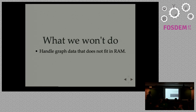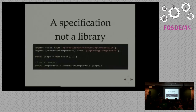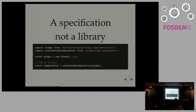What we won't do is handle graph data that does not fit in RAM. We just take graphs, hold them in RAM, and that's it. If your graph is 14 gigabytes, it's not our problem. This is a specification — not a library. There is no perfect way to implement graph data. So with a specification, anybody can implement it however fits their use case and aggressively optimize for specific scenarios, while still having the benefit of the standard library and the entire ecosystem of libraries built on this specification without having to rewrite them again and again.